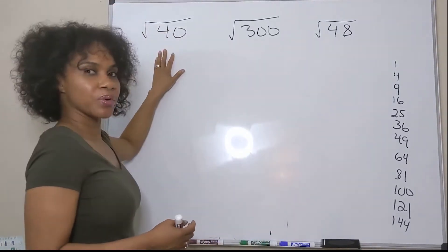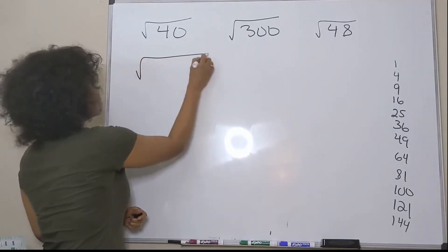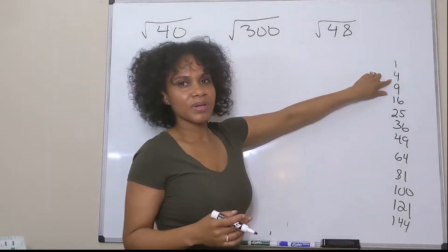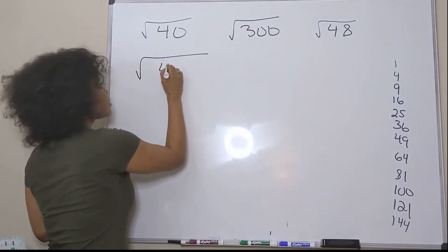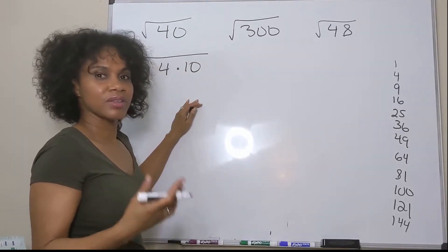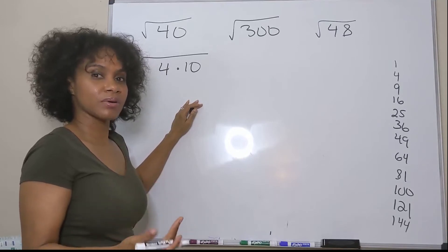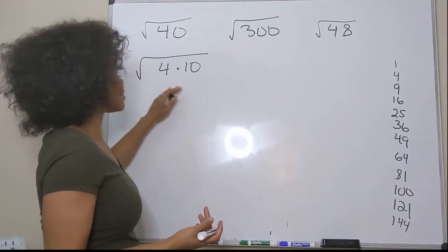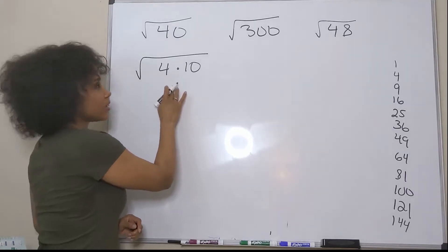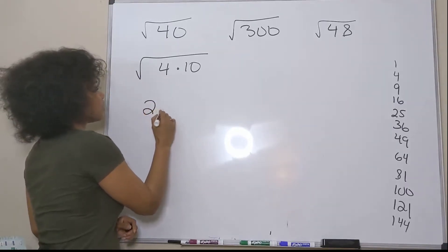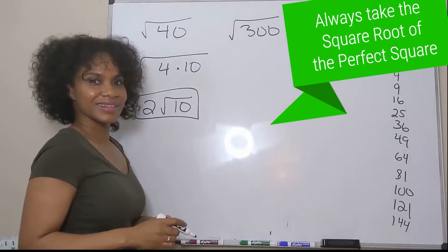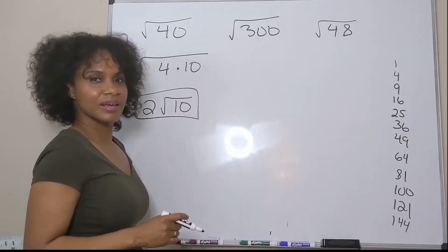Let's try the square root of 40. I want to find two factors of 40 and one has to be a perfect square — the only one here is 4. Keep in mind that we have to choose the highest perfect square, otherwise we're going to be left with another number under the radical that still has a perfect square factor. So the square root of 4 is 2, and I leave my 10 under the radical. That's it.